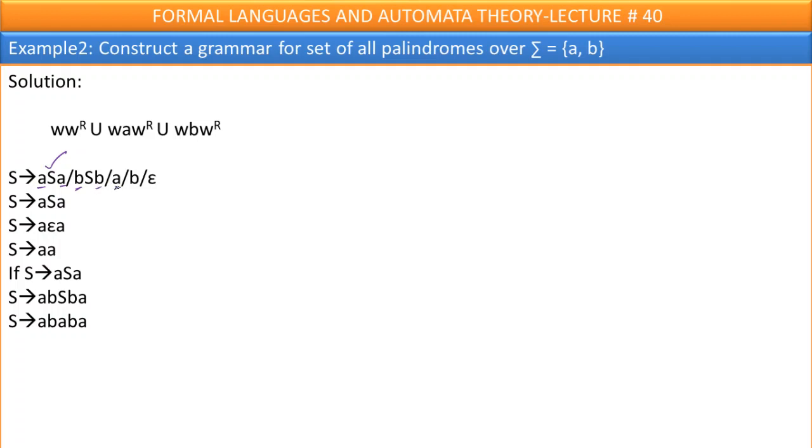Just simply I can write S goes to a. Why? Because if I write a, that is also a palindrome. If I read from this side a, from this side also it's a. In similar manner, S goes to b, S goes to epsilon.